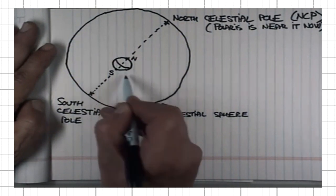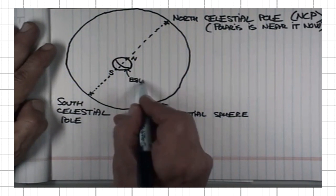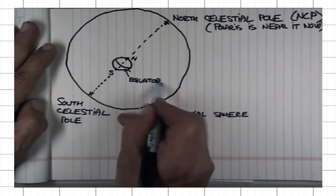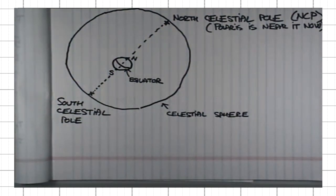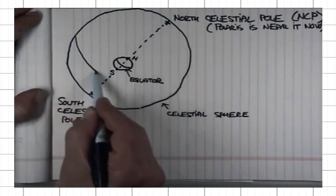Then here is the Earth's equator. The line on celestial sphere that is directly above the Earth's equator is what we call celestial equator.